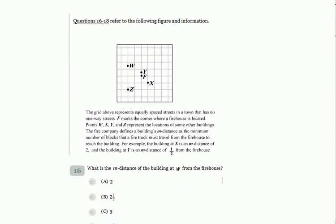Continue to solve the CIT test. Question 16-18 refers to the following figure and information. The grid above represents equally spaced streets in a town that has no one-way streets.